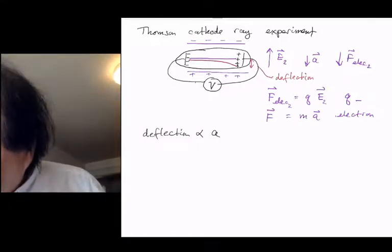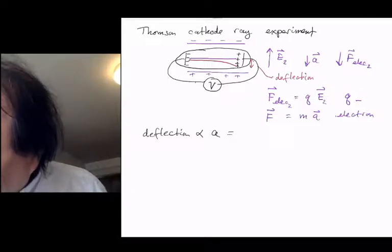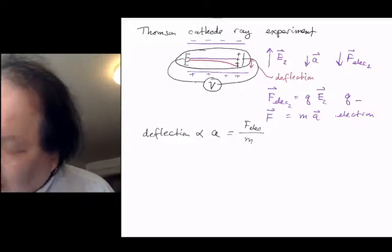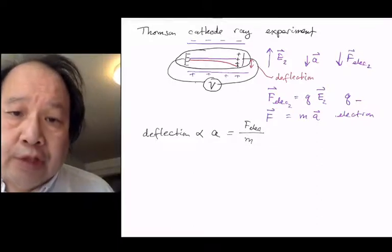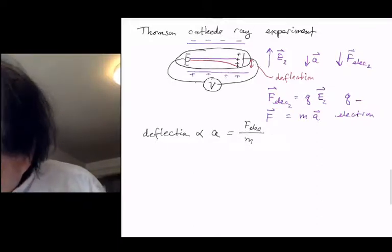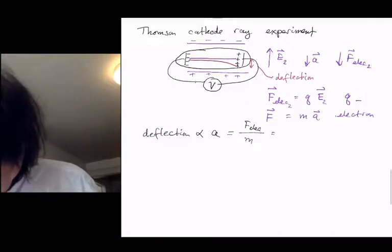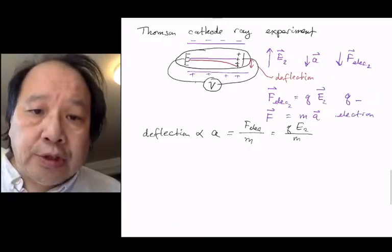And then he plugged it in. Acceleration times mass is force, or it can be written as mass-force electric field. Mass times acceleration is force electric, and the electric force is q times e, remember 2, mass. And so this is the situation.